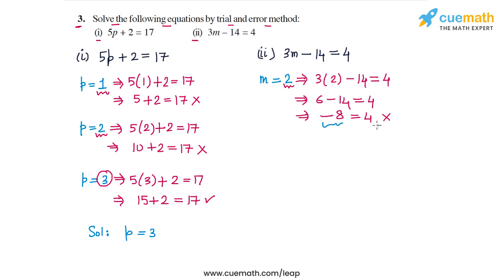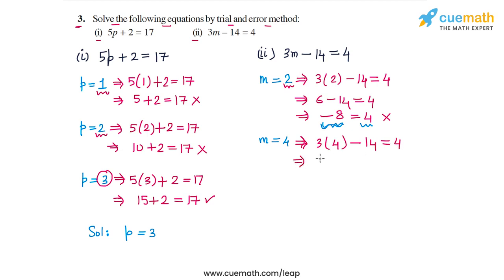The LHS is too negative compared to the RHS, so let's try a higher value of M so that the LHS increases in value. Let's give M equal to 4. For M equal to 4, on the LHS we get 3 times 4 minus 14, and on the RHS we have 4. 3 times 4 is 12, so 12 minus 14 on the LHS equals minus 2, but the RHS is 4. This does not work, so M equal to 4 is also not the solution.